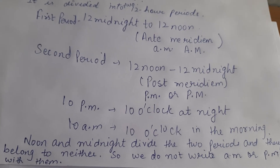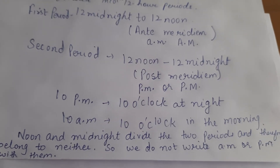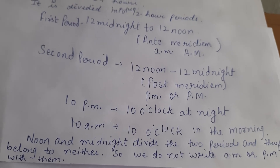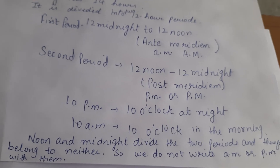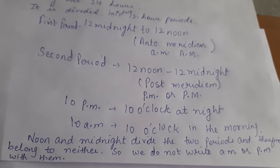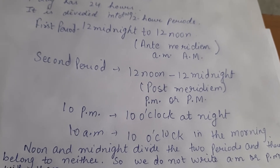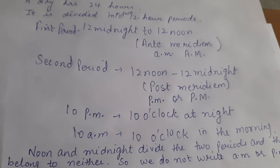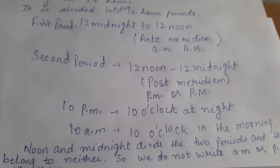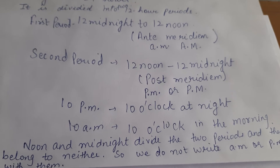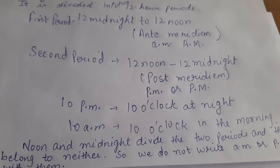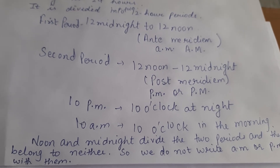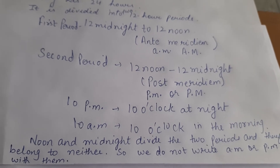Noon and midnight divide the two periods, so they do not belong to either a.m. or p.m. We do not write a.m. or p.m. with them. When noon or midnight comes, we simply write 12 noon or 12 midnight. So, the first period is from 12 midnight to 12 noon — we add a.m. — and the second period is from 12 noon to 12 midnight — we add p.m.